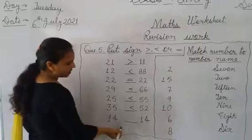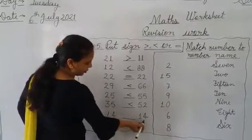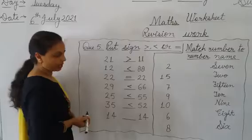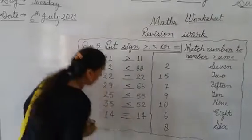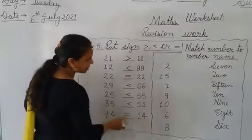Match. This is 40 and this is 40 also. So what will you do here? We will put sign equal here because these are equal digits.